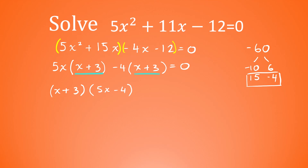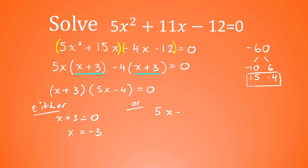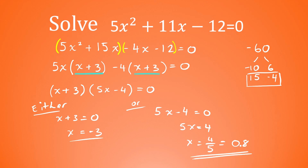So the whole thing factorizes to x add 3, and then in the second bracket it's the two bits left outside: 5x and negative 4, giving 5x minus 4, equal to 0. We solve it exactly like any other quadratic. Either x add 3 is equal to 0, in which case x is equal to negative 3, or 5x minus 4 is equal to 0, in which case 5x equals 4, so x equals 4 over 5, which as a decimal is 0.8. Those are our two solutions: x is equal to negative 3 or x is equal to 0.8.